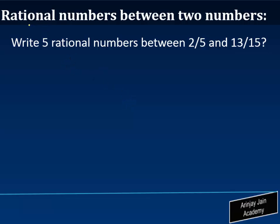In this video we are going to learn how to write rational numbers between two given numbers. Write 5 rational numbers between 2/5 and 13/15. Before we get into doing this question, let me recall what is a rational number.